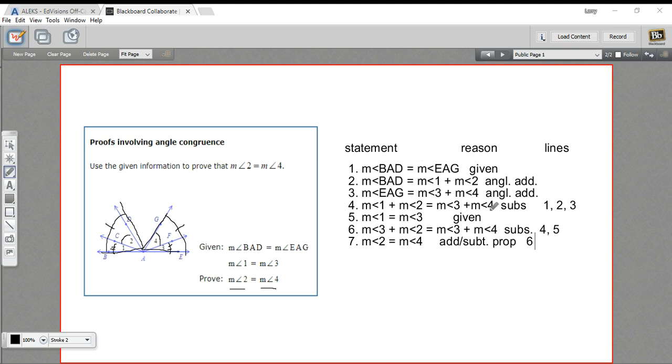Then we take that other piece of the given information that allows us to substitute angle 3 in here instead of angle 1, which gives us an equation where we can subtract angle 3 away, leaving just angle 2 equal to angle 4. So that is a proof that involved angle congruence.